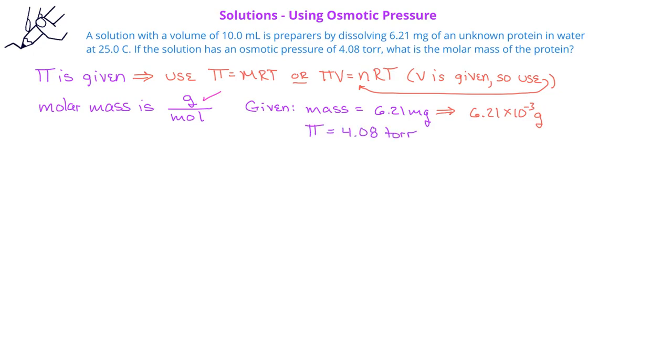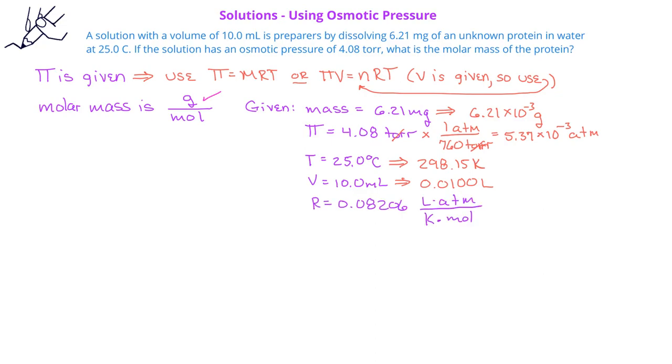We're given the osmotic pressure, but it's in units of torrs. We could convert torrs to atmosphere, since we remember that there's 760 torr in one atmosphere, and we find that the osmotic pressure is 5.37 times 10 to the negative third atmospheres. We could also convert the given temperature to Kelvin, so we get a temperature of 298.15 Kelvin, and the volume can be converted to liters, so we have a volume of 0.0100 liters. The gas constant is what we always know it to be, 0.08206 liters times atmosphere over Kelvin times mole. Now that we have π, V, r, and T,